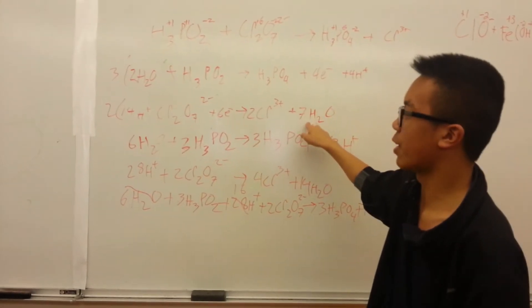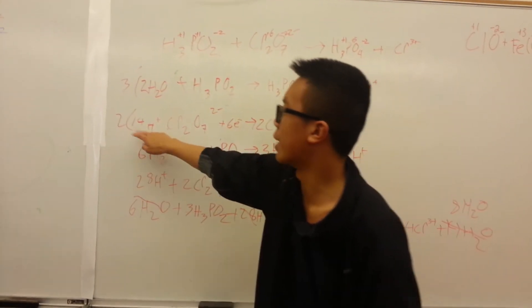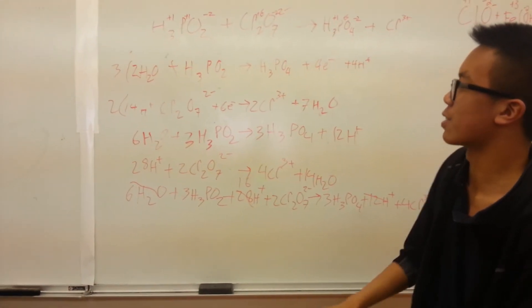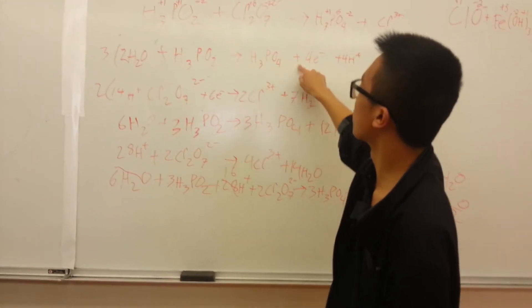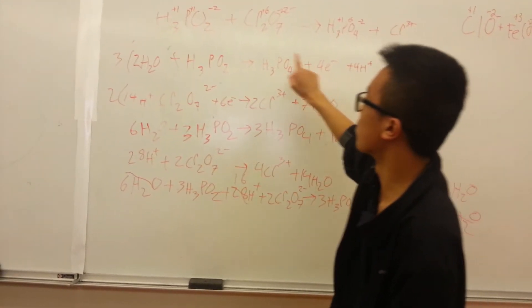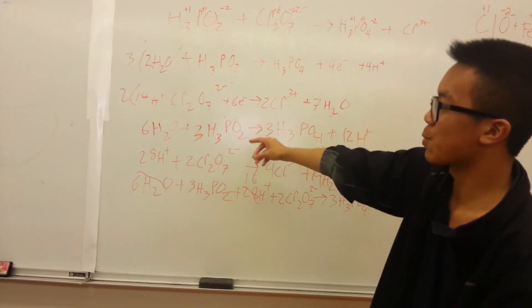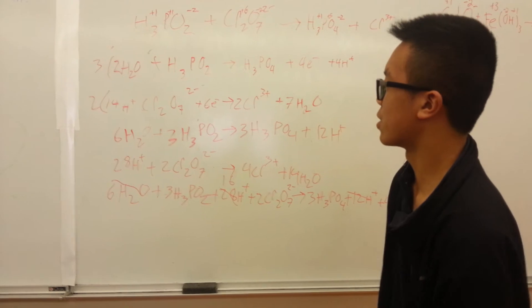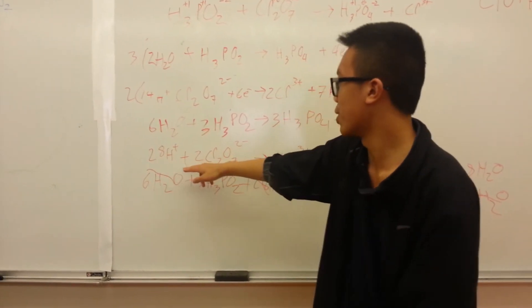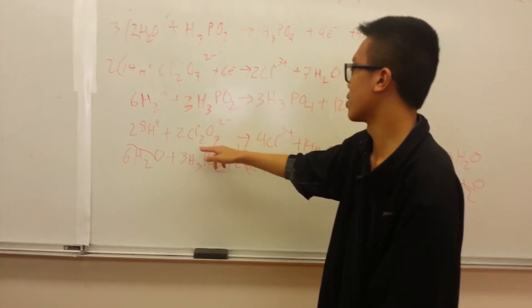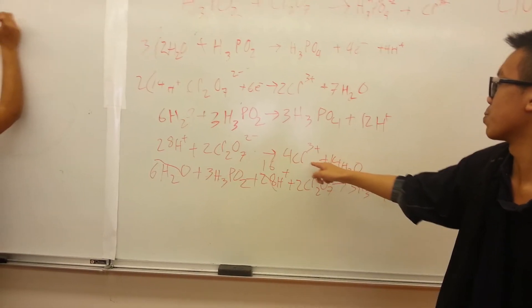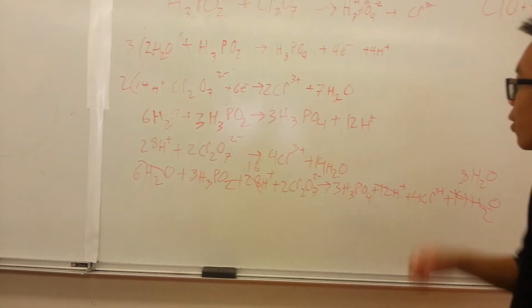Now what we did next is we multiplied all the electrons together to make them the same. Since this is 6 and this is 4, we had to make it 12. 4 times 3 is 12, and 2 times 6 is 12. You multiply everything in it altogether, so this is what you would get: 28H+ plus 2CR2O7 2- goes to 4CR3+ plus 14H2O.